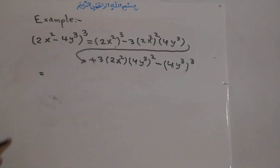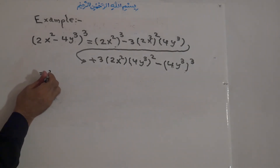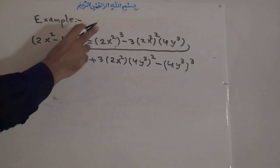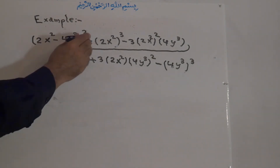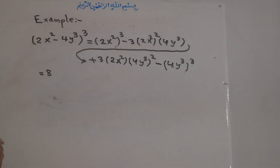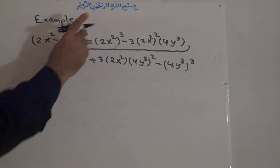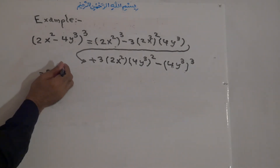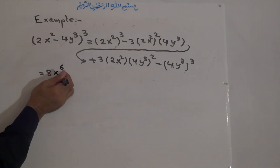Now we simplify. 2 cubed is 2 times 2 times 2, which equals 8. And (x squared) to the power of 3 is x to the power of 6, because 2 times 3 is 6. So the first term simplifies to 8x to the power of 6.